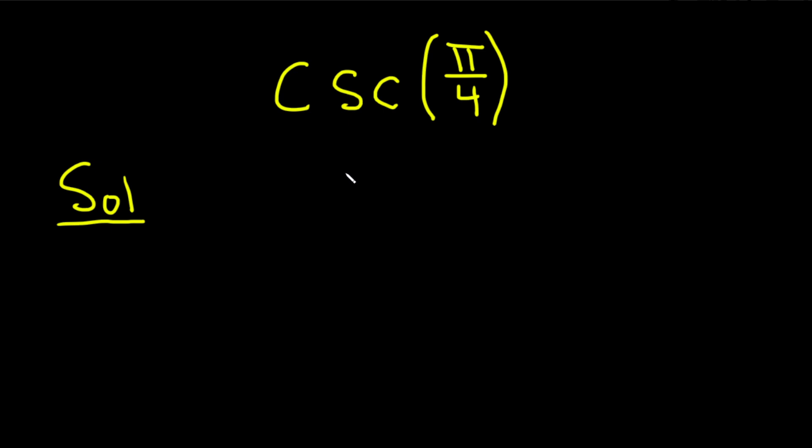We'll start by writing down a very powerful formula. The cosecant of x is equal to 1 over the sine of x.